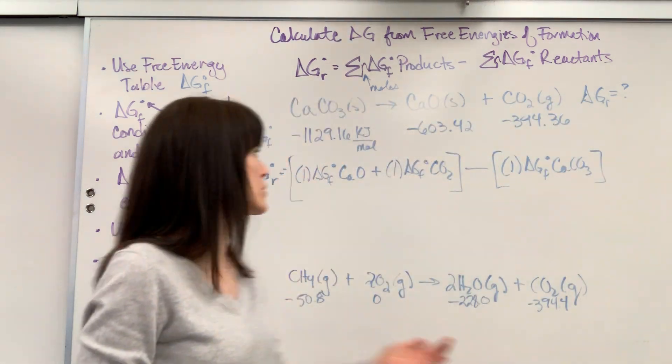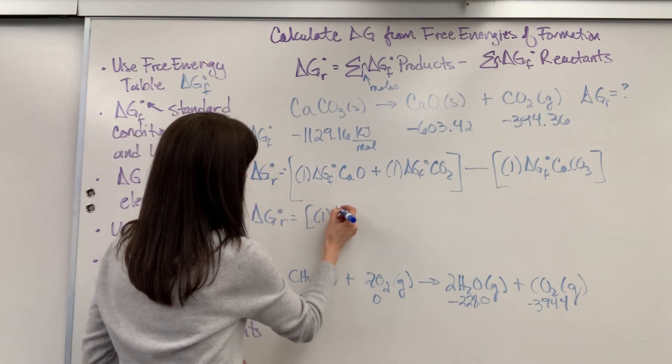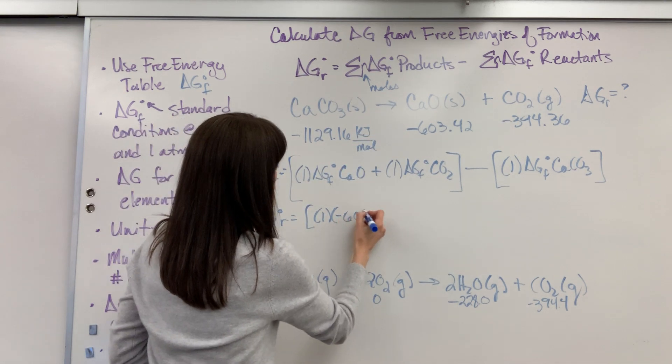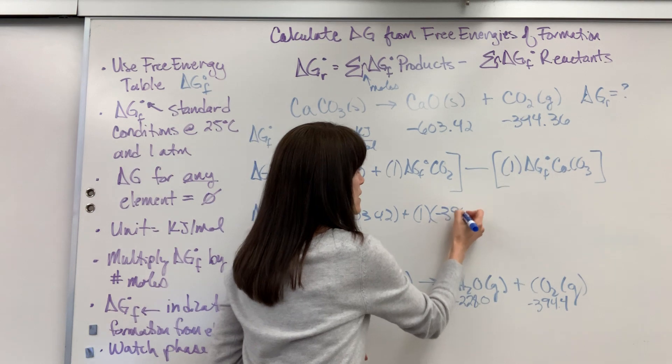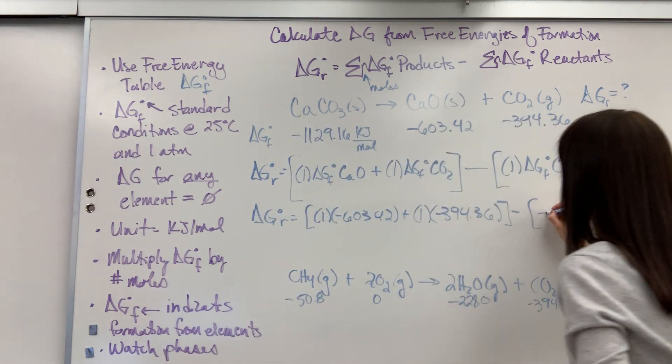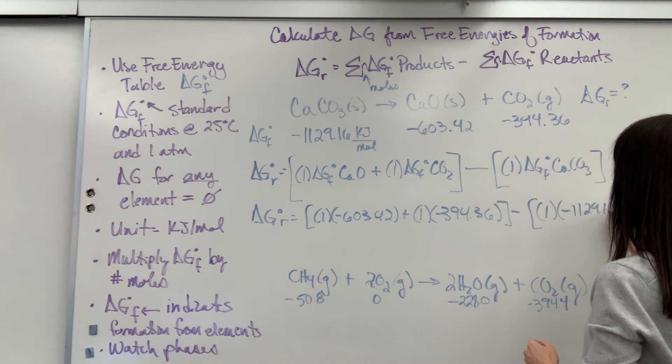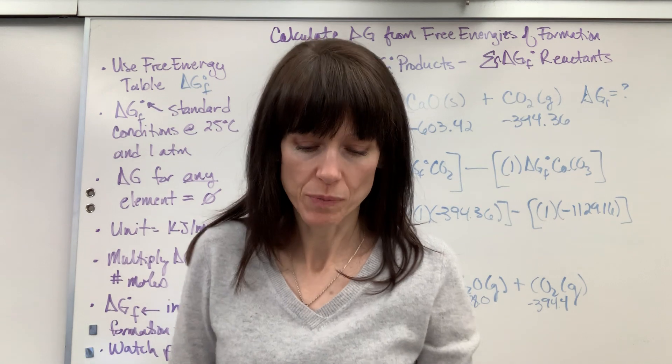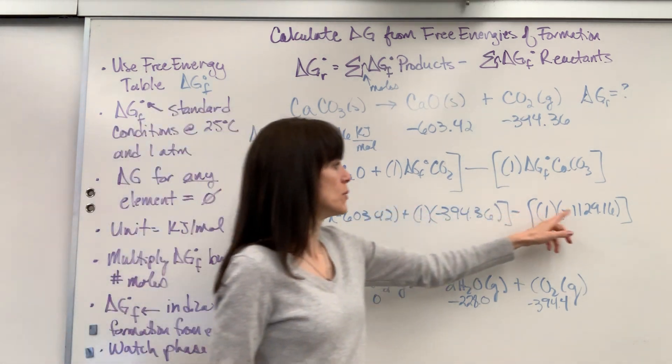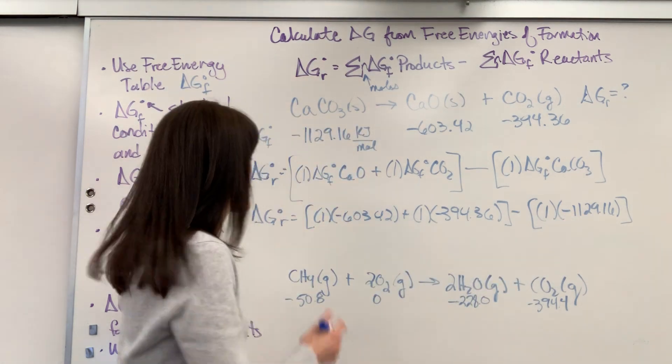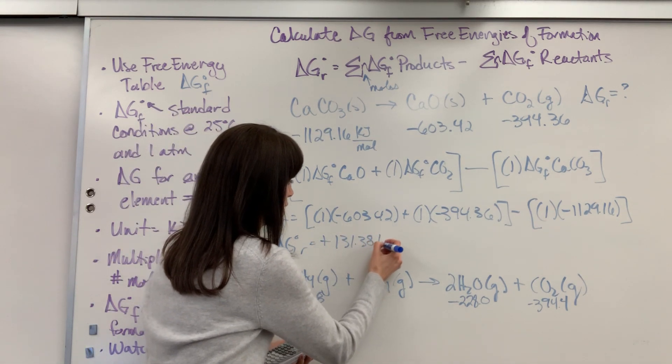Okay, now all we have to do is plug in the numbers that we got from the table. And I already looked up the values for you. So delta G for the reaction equals one times negative 603.42, plus one times our carbon dioxide, negative 394.36, minus, do you know, let's put the one first. One times the minus, sorry, 1129.16. There we have it. Next little note to be careful on, watch the signs. So I'm going to add these up, multiply, add up, get a negative number here, multiply, be careful, negative times negative, that becomes a positive. So once we do our little bit of math, we are going to get a positive 131.38 kilojoules per mole. So let's write that down over here.